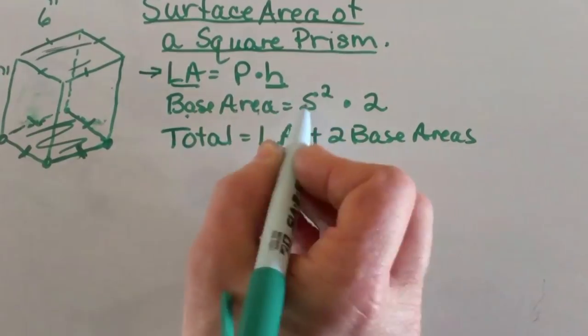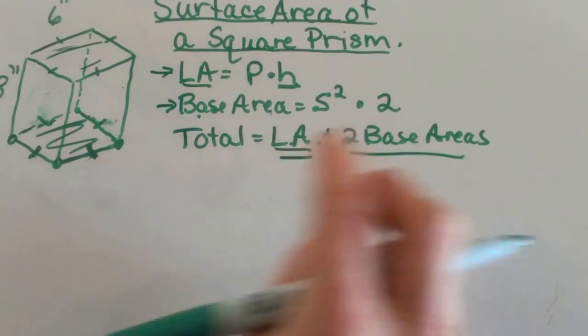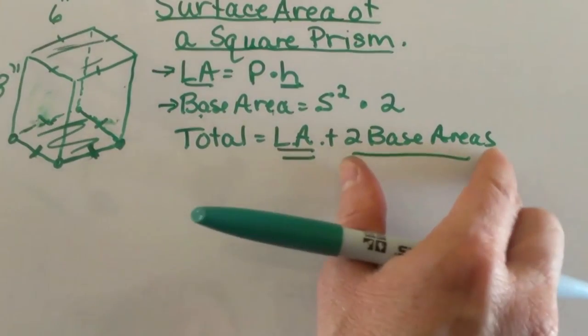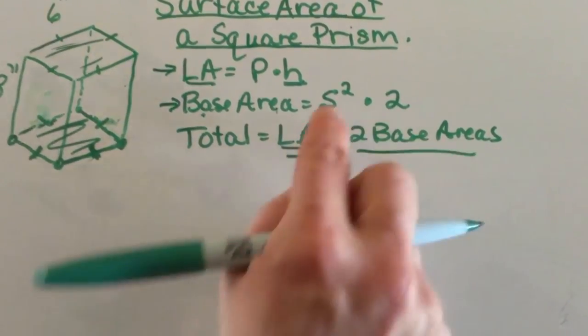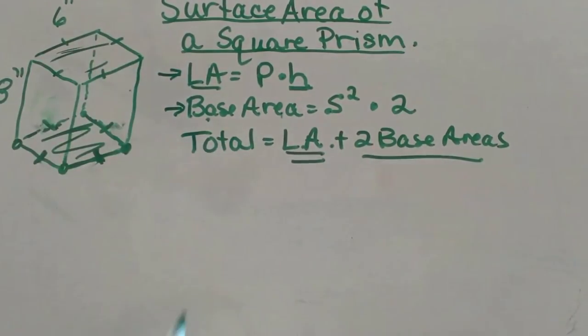Once we find each of those two separate parts then we're going to add them together to find the total surface area. And remember we have two bases. So once we find the area of the base we have to double it to account for both bases.